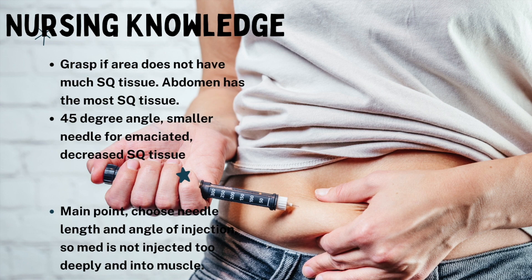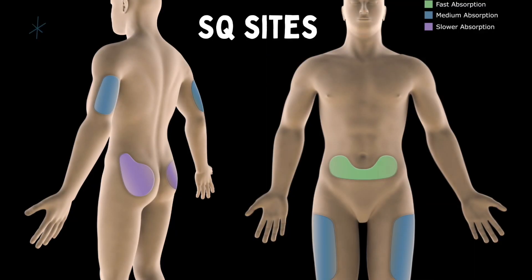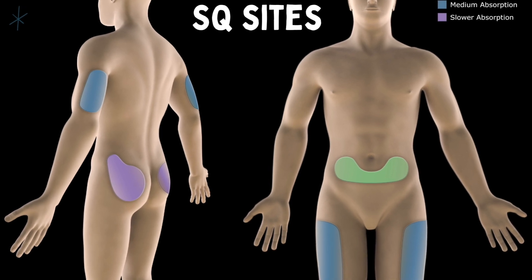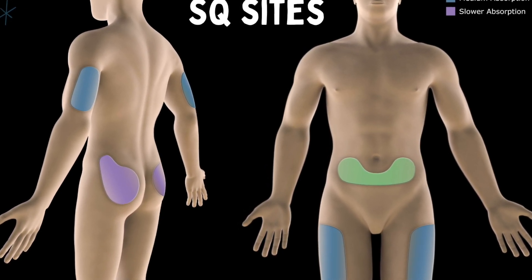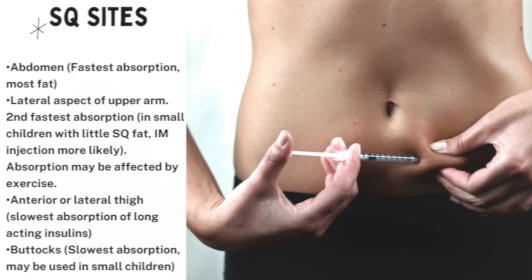We want to choose the needle length and syringe gauge depending on the patient. Looking at different subcutaneous sites: you have the lateral aspect of both upper arms, the abdominal area, the thighs, and the buttocks area. In terms of rate of absorption, the abdomen is the fastest. The lateral aspect of the upper arm is second. The anterior or lateral thigh is the slowest absorption, and the buttocks is also very slow.